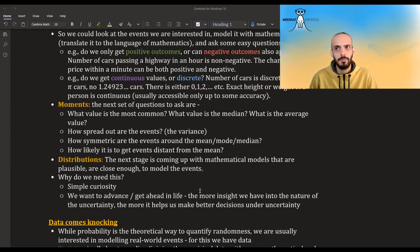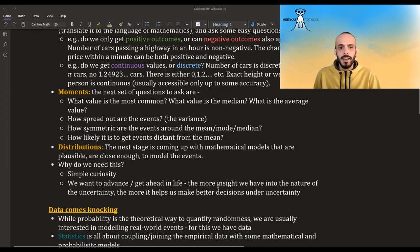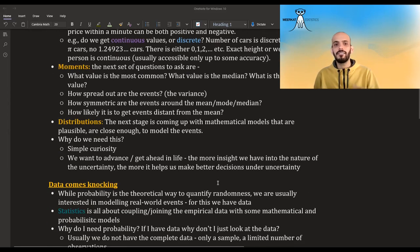The next stage is coming up with what is called distributions. So these are like mathematical models that really pinpoint almost everything we need to know about the uncertainty. And these distributions have more characteristics. They have certain ways that you can look at the uncertainty. You can look at it on the PDFs, the probability density functions, or PMFs, probability mass function. You can look at the CDF, the cumulative distribution function, etc. And you might ask yourself, well, why do I need all of this? Why do I need to structure the uncertainty? Well, it could be just for simple curiosity. But most likely is that we all want to advance in life, get ahead in life. And the more insight we have into the nature of this uncertainty, the better decisions we can make.